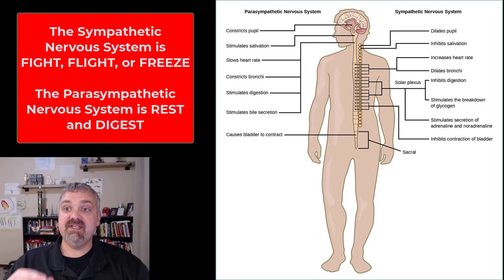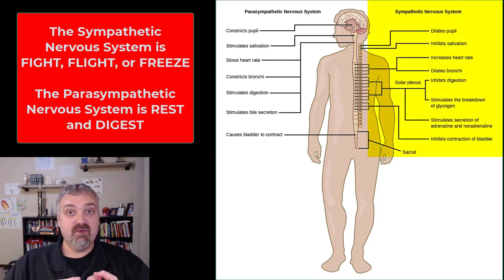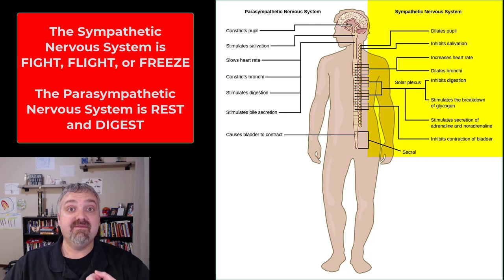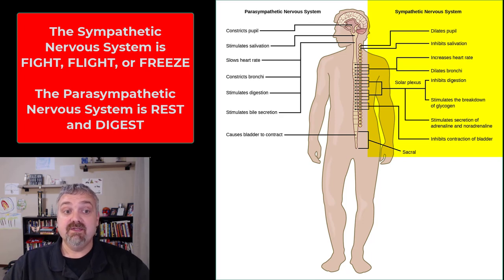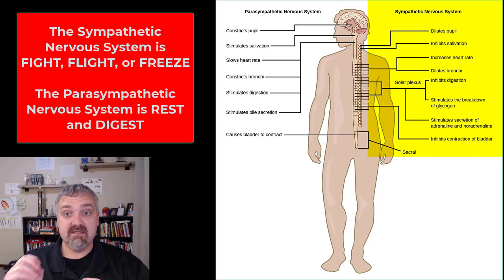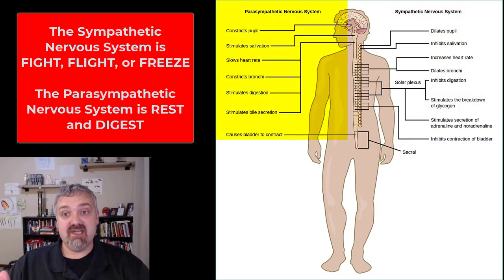The two key divisions are the sympathetic nervous system, which we call the fight or flight system — but really it should be called fight, flight, or freeze, because freezing is a response. I see that with students when they have test anxiety. So the sympathetic nervous system is the fight, flight, or freeze system. The parasympathetic division is the rest and digest system.